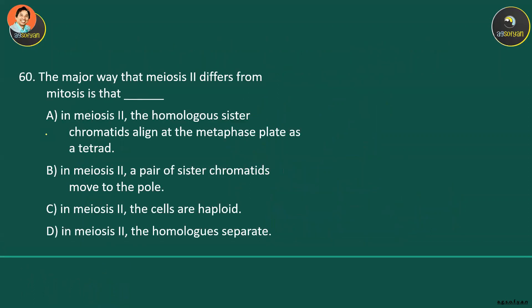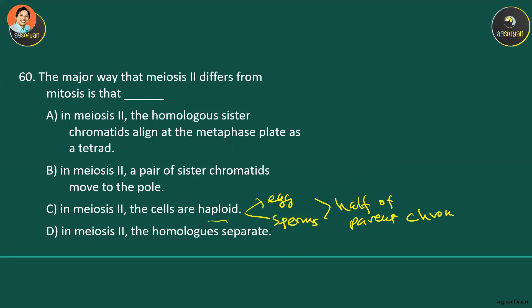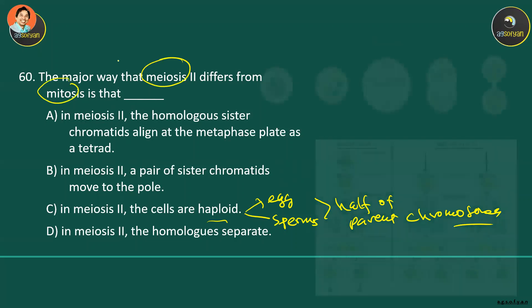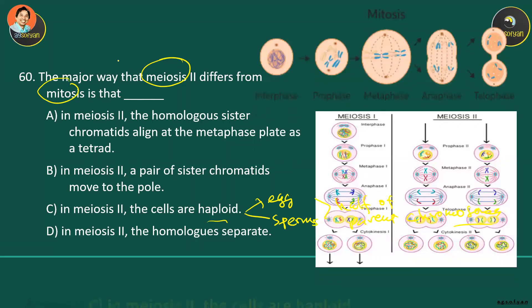The major way that meiosis differs from mitosis is that meiosis produces haploid cells. Haploid cells — like eggs and sperm — carry only half of the parent's chromosomes. This is the key difference between mitosis and meiosis.